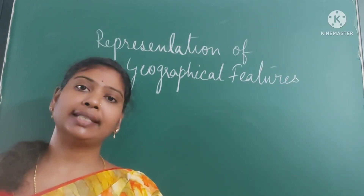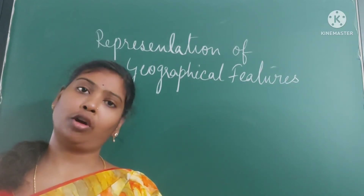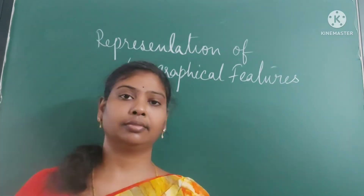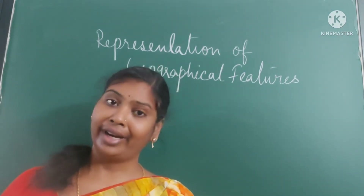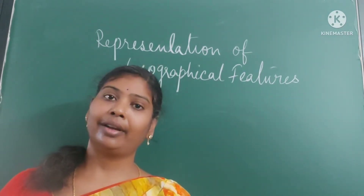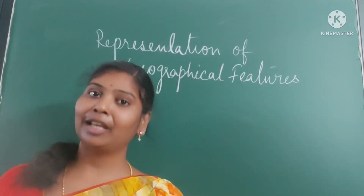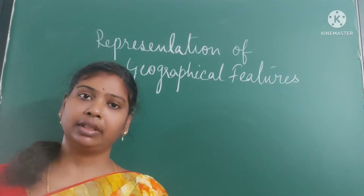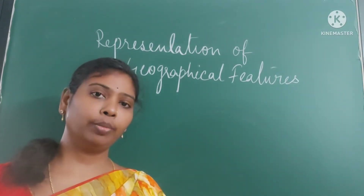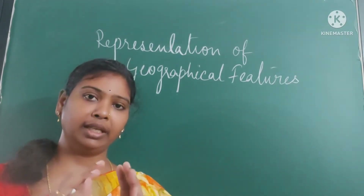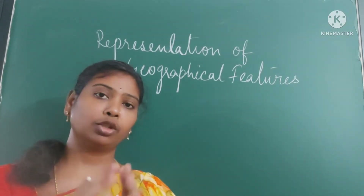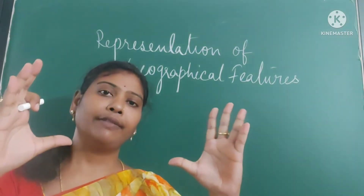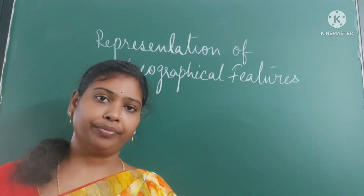A topographical map basically shows all the relief features, elevation, drainage, all man-made features — everything. A globe is a miniature whereas a topographical map is a very large scale map.